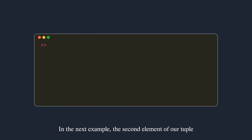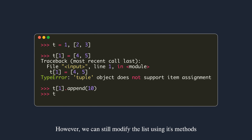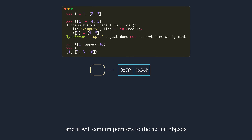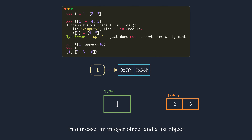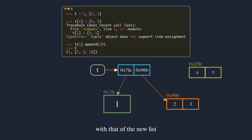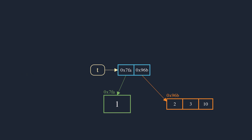In the next example, the second element of our tuple is a list with elements two and three. As expected, if we try to assign a new list to the tuple element, an exception is raised. However, we can still modify the list using its methods. The reason: when the first statement is executed, memory is allocated for the tuple containing pointers to the actual objects — an integer object and a list object. When we try to assign a new list, Python is trying to update the pointer stored in the tuple with the address of the new list. This raises an exception since tuples are immutable.